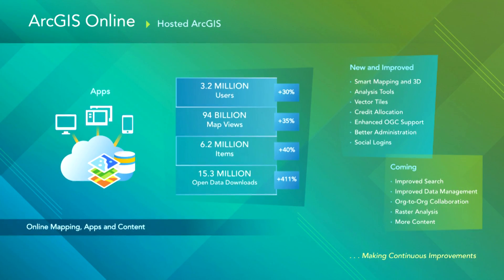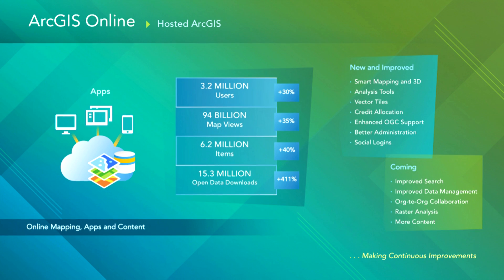Talking about ArcGIS Online, we've got some incredible numbers to share. There are over 3 million users with an annual growth rate of 30%. Last year there were over 94 billion web map views, growing at 35%. There have been 6.2 million items shared, growing at 40%. And in data downloads, last year we had 15 million open data downloads, growing at over 400%. ArcGIS Online is a key foundational part of ArcGIS, and its acceptance continues to grow rapidly.